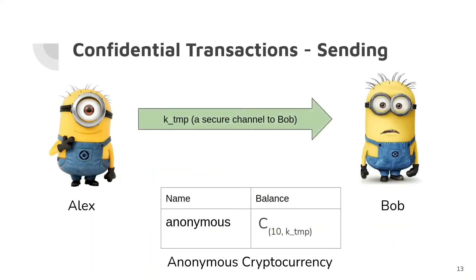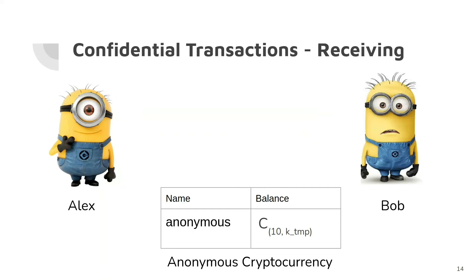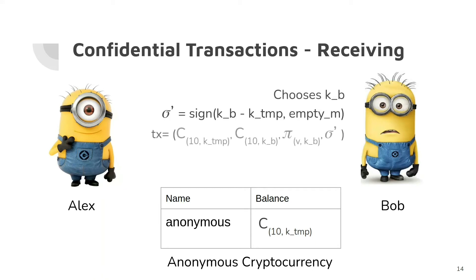Alice sends the temporary key to Bob. Now both Bob and Alice know the secret key of the current commitment, so Alice can take coins back. To prevent that, Bob needs to modify the Pedersen commitment. Similar to the previous transaction, Bob chooses a new key and sends a transaction updating the output commitment. Once it is done, only Bob can spend coins. Now we can say coin sending is complete.